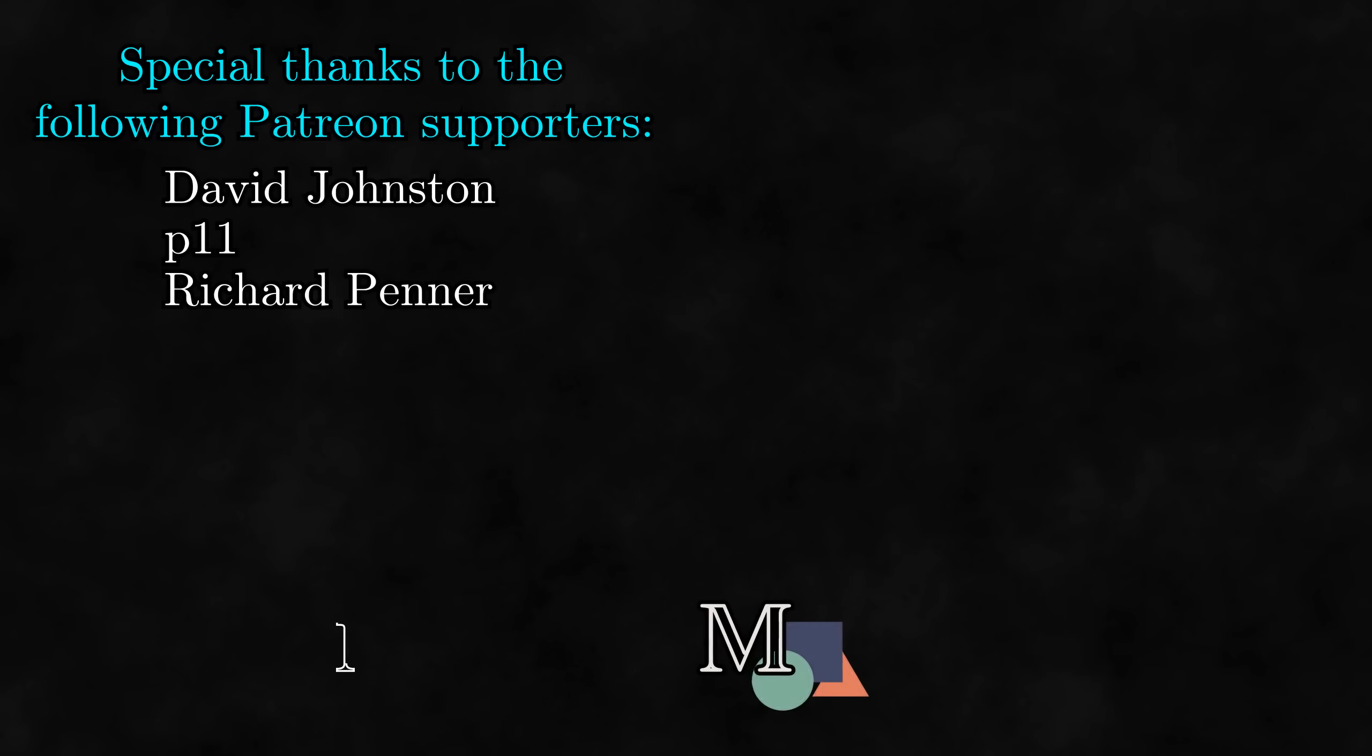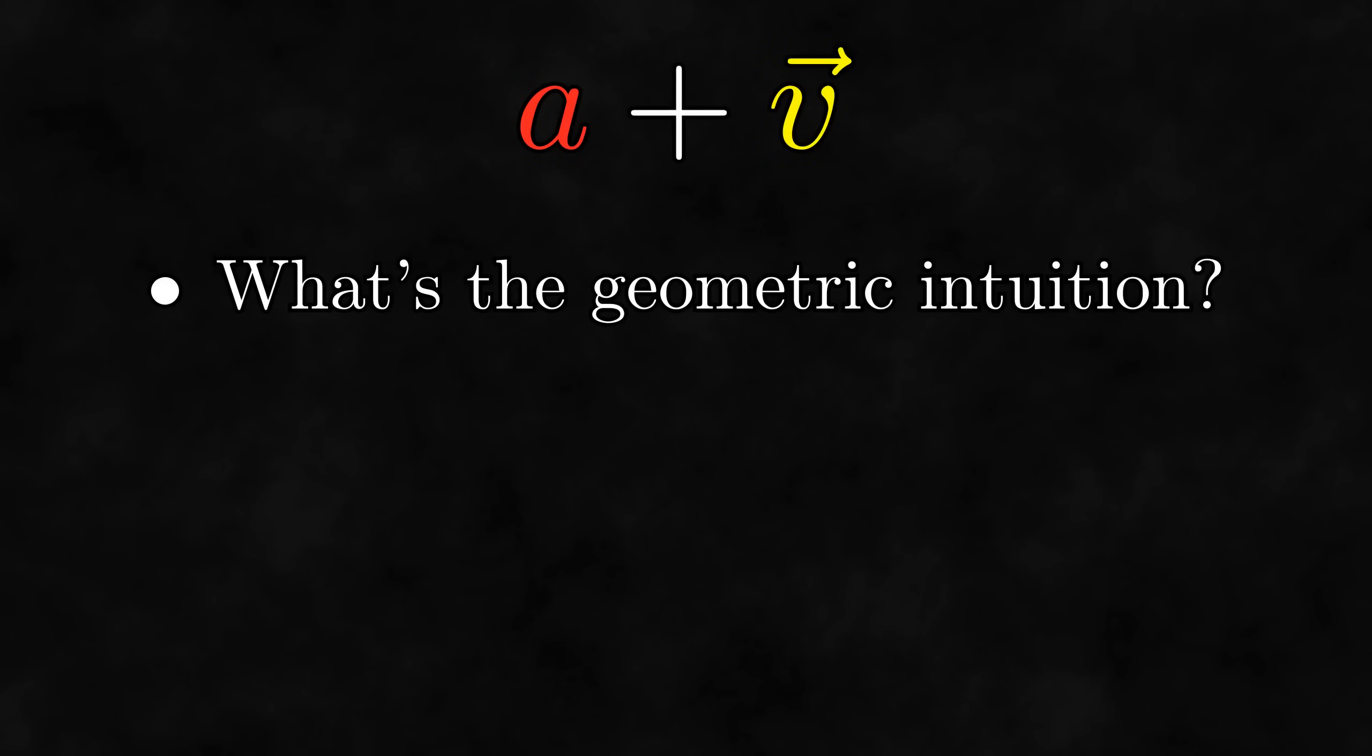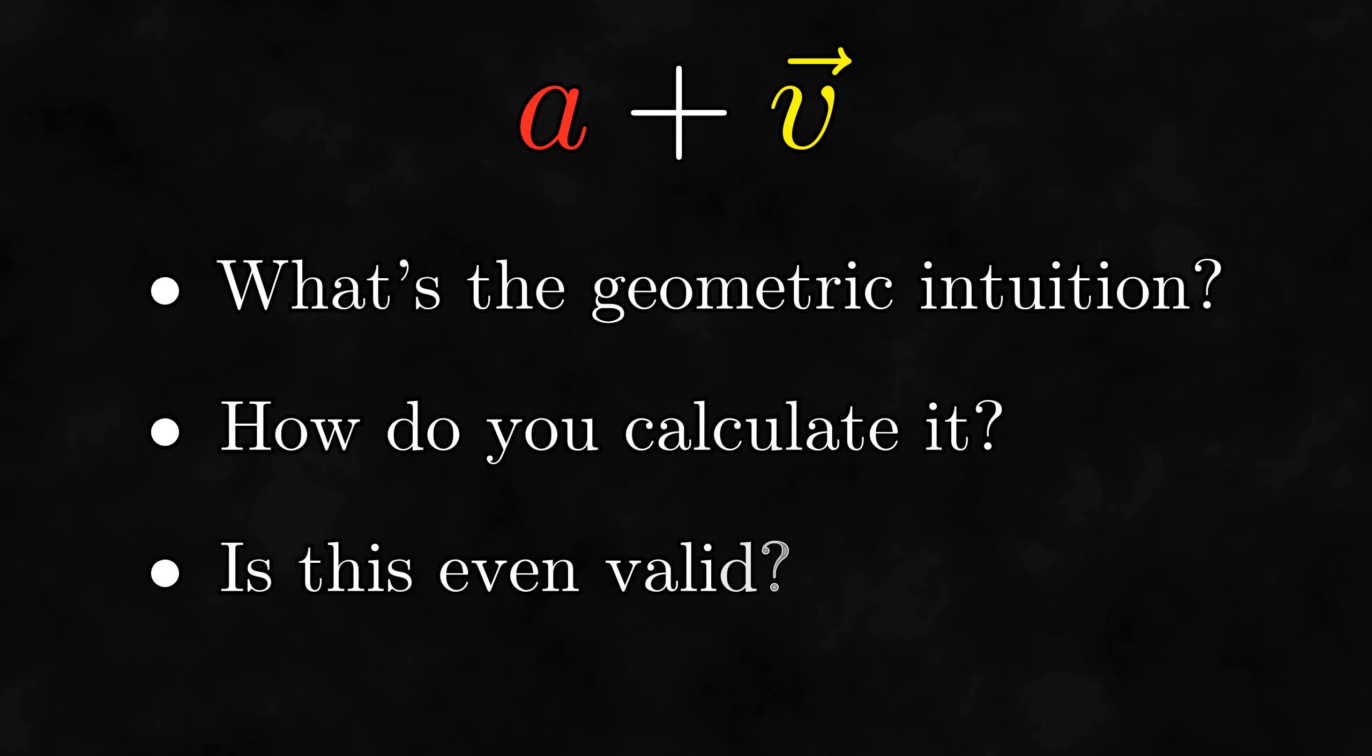So how can we add scalars and vectors? Let's say we have a scalar a and a vector v. What process can we use to find their sum? Here it is, and that's it. Alright, the video's done. See you next time. Okay, I can tell you're not satisfied with this answer. What's the geometric intuition for this sum? How do we actually calculate this sum? And how do we know that doing this sum is even a valid operation? I'll be honest, other than the last one, these questions don't have satisfactory answers, at least to me.